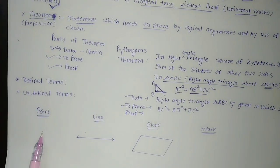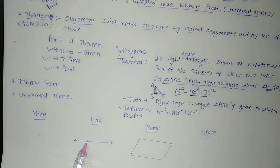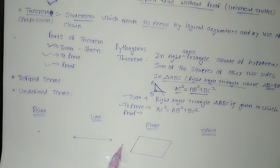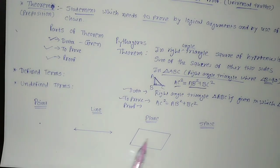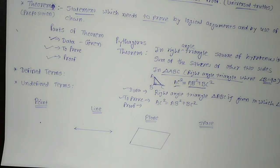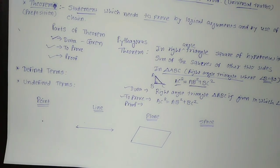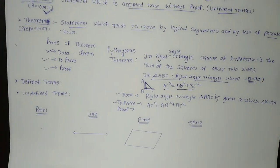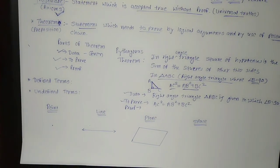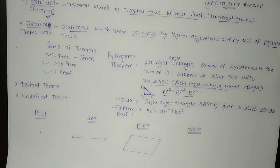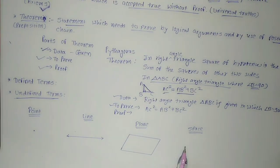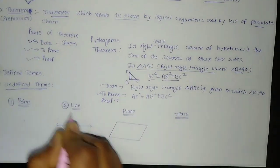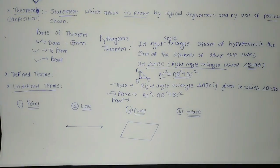These are the four undefined terms in geometry. A point is expressed by a dot and we cannot define it. A line goes to infinity in both directions, so it is also undefined. A plane is like a paper with infinite boundaries on all sides — all sides extended to infinity — so we cannot define it either. Space means everything around us, and we cannot give any specific definition to space. So point, line, plane, and space are the four undefined terms in geometry.